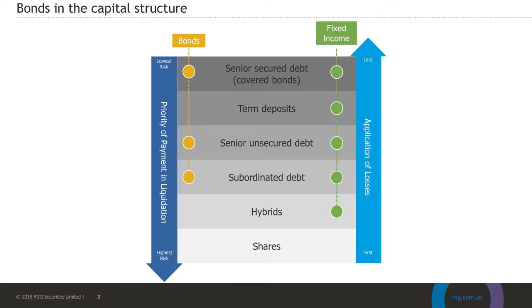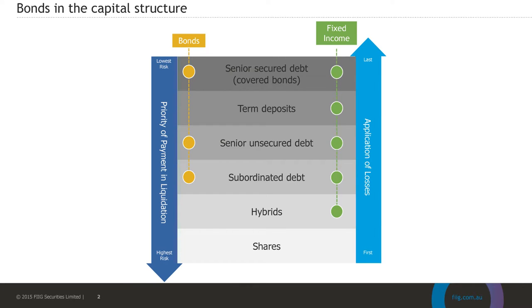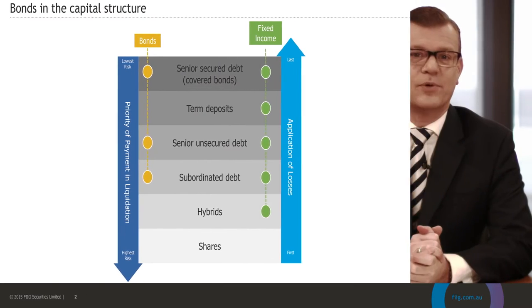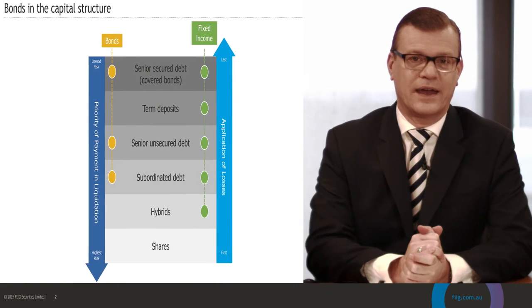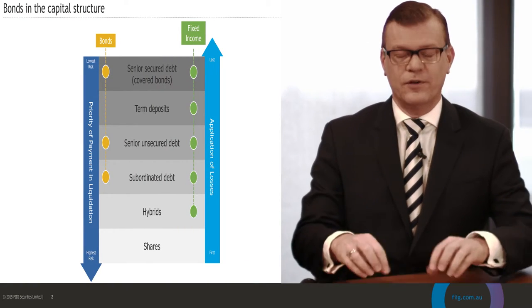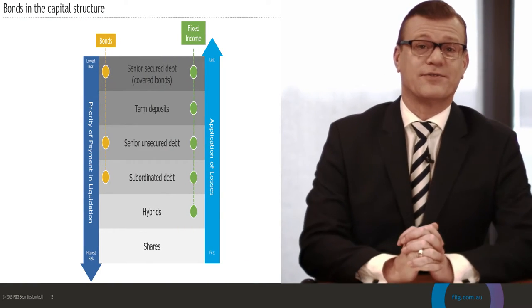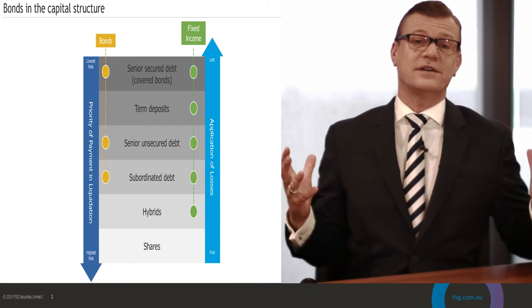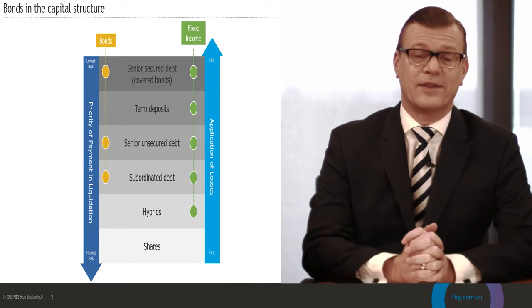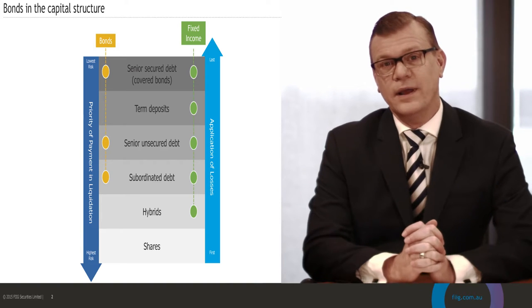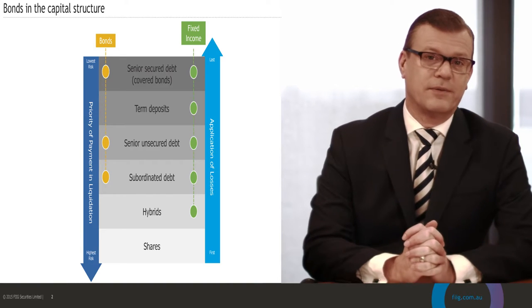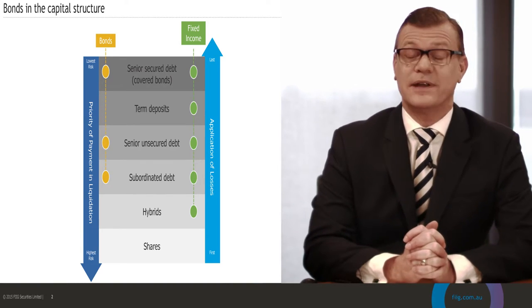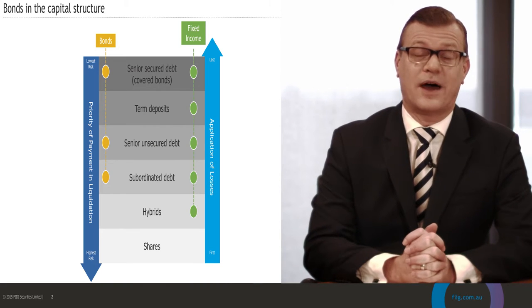As you can see here in the capital structure of a bank, fixed income really refers to any of the tiers on the capital structure apart from equity. However, bonds refer to the senior and subordinated tiers on that capital structure. As we move up the capital structure from equity to debt, you are afforded additional protections. But only bonds provide the features that work to preserve capital and protect your income stream through cycles.